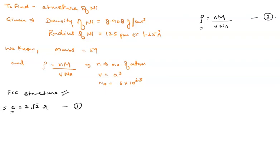So let us find out the value. So from equation 1, on solving this, A is equal to 2 root 2, we know the value of radius that is given, that is 1.25 Angstrom. So on solving this,